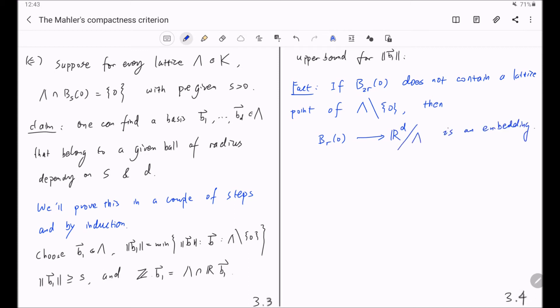The bijection onto its image. And the volume of R^d mod lambda. Remember, we assume the lambda.